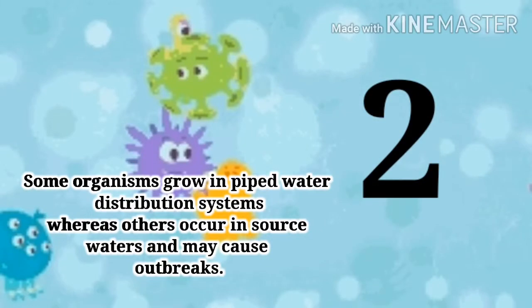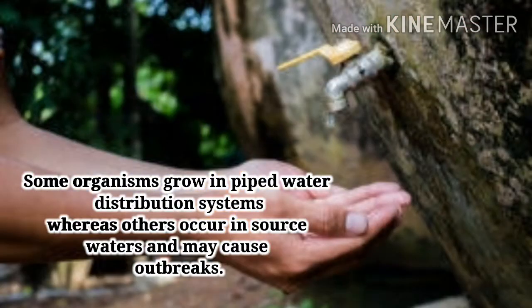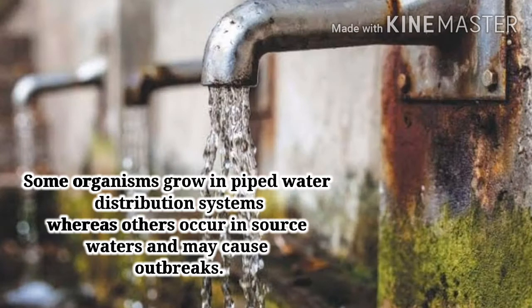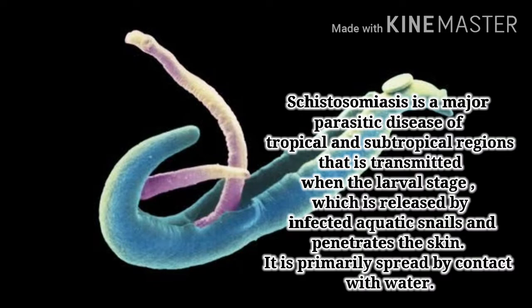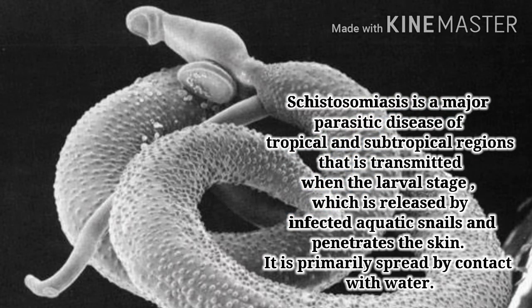Some organisms grow in pipe water distribution systems, whereas others occur in surface waters and may cause outbreaks. Schistosomiasis is a major parasitic disease of tropical and subtropical regions. It is transmitted in the larval stage, which is released by infected aquatic snails and penetrates the skin, and is primarily spread by contact with water.